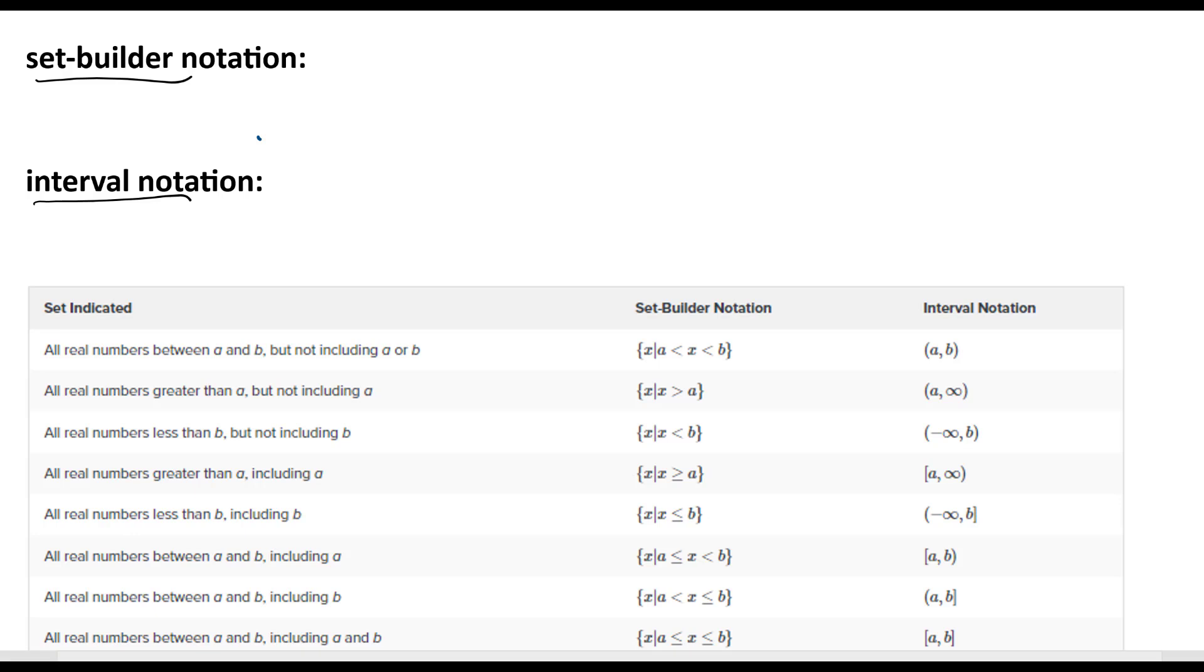So set-builder notation would be something like this. Let's just do a number line. Here's negative 1 and here's 3, and might be a solid circle here and an open circle there.